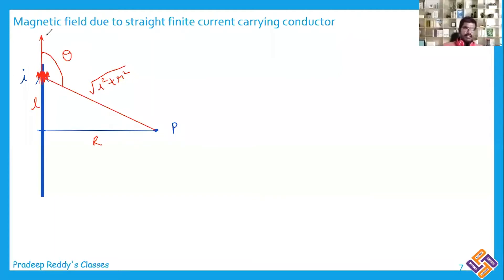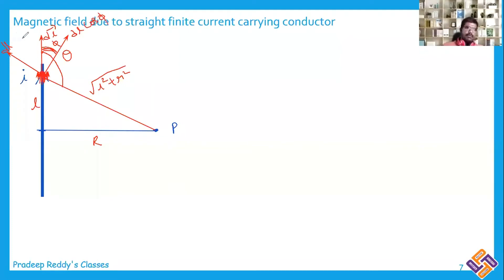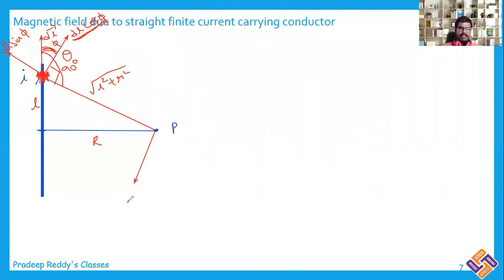When dealing with the magnetic field, we have dl-bar and r-bar. I need to resolve dl-bar into components: one component along the wire direction and another perpendicular to it. The angle between them is φ. The component dl·cosφ makes exactly 90 degrees with the position vector r-bar, so because of dl·cosφ, the magnetic field dB will be produced perpendicular to that.